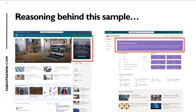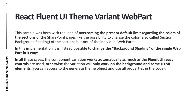There are many ways to do this. You can write your code with a background image, or you can use the section background to change the background, and then the web part inside this section on a different background. My demo is an exercise in how to use the Fluent UI theme variation, not only inside the section page, but inside the web part itself.